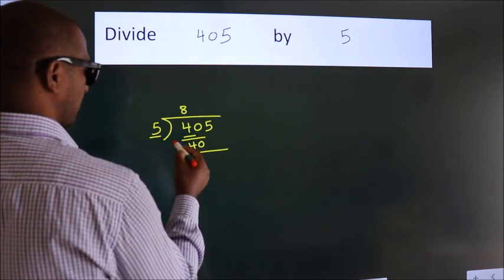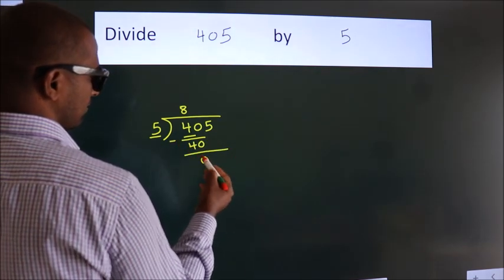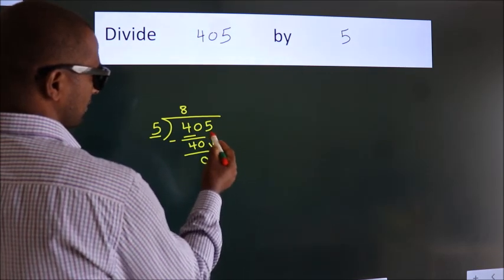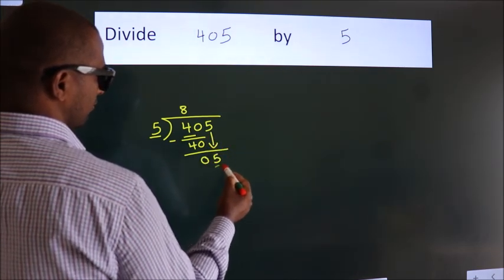Now we should subtract. We get 0. After this, bring down the beside number. So, 5 down. 5.